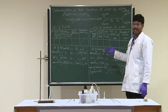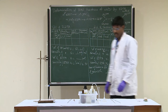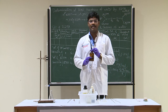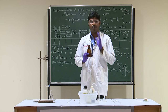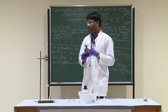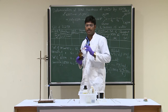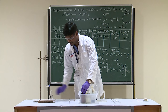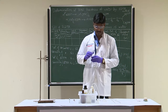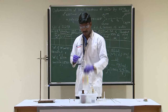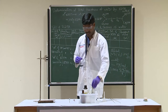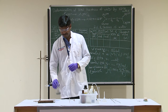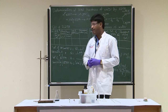Now for the second titration — estimation of hardness of water. The water sample is given and its hardness is unknown. Take 40 ml of the sample using a pipette into a conical flask. Note: for standardization of EDTA you took 20 ml, but for this titration take 40 ml. Add 5 ml of buffer and 2 drops of EBT. Fill the burette again with EDTA and titrate. When you get the steel blue color, that is the end point — note down the value.